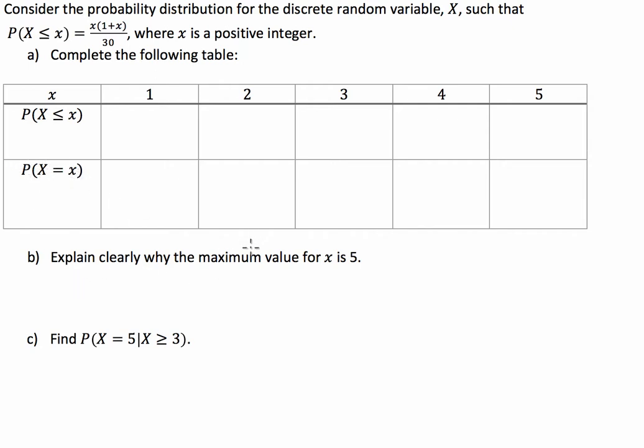We've been asked to then explain clearly why the maximum value for x is 5 and this conditional probability situation down the bottom. So this is basically an easy probability distribution question sort of disguised as a complicated one and you'll see why I mean that in a second.